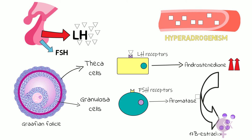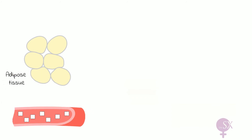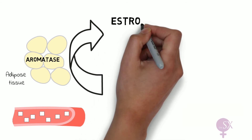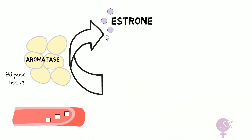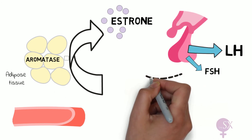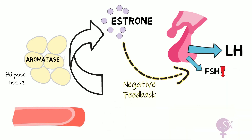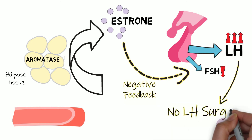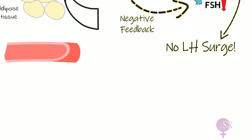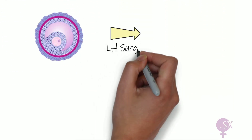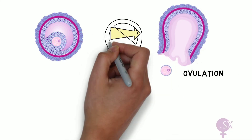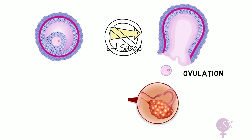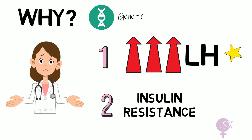This results in symptoms like acne, hirsutism, and male pattern baldness. Androstenedione present in the blood reaches adipose tissue, where it is converted by aromatase into estrone. Estrone has a negative feedback effect on the anterior pituitary gland, decreasing levels of FSH. Because LH levels are very high, there is no LH surge and therefore no ovulation. The LH surge is required for the ovum to break away from the Graafian follicle; without it, the follicle will persist in the ovary and appear as a cyst, or it may degenerate with the other follicles.